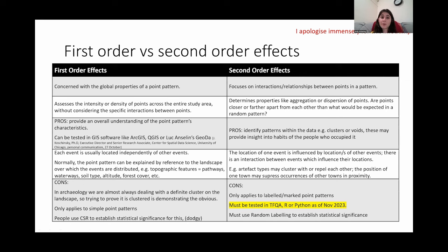Now there are several options for tests you can conduct to test second-order effects on point patterns, however as of this year none are implemented in ArcGIS. So you can only choose between R, which requires you to know how to program, or TFQA, which is a program developed by Keith Kinter in the 1980s. I would have used that except it's extremely outdated, doesn't run on any modern operating systems, and also costs 50 US dollars.